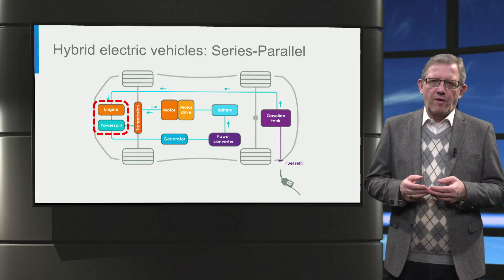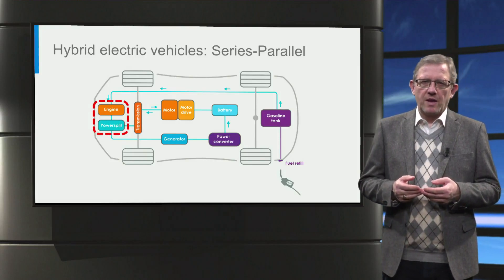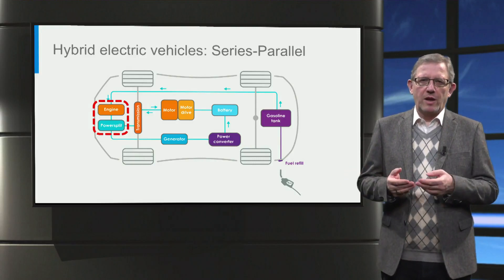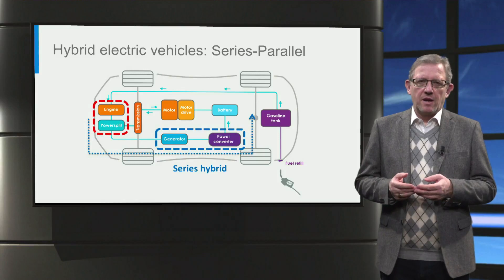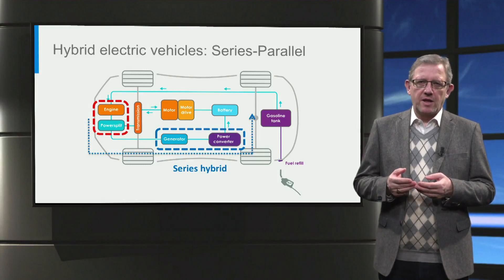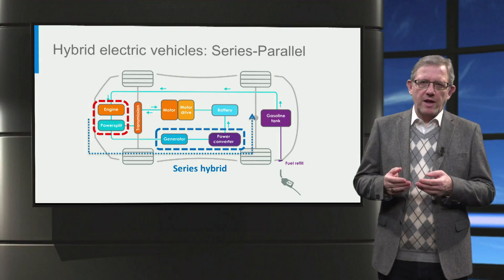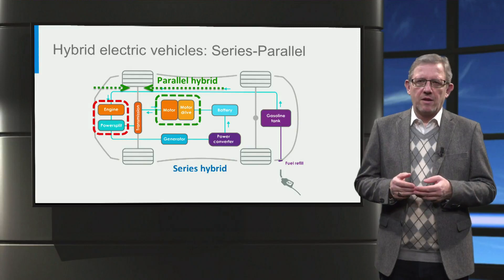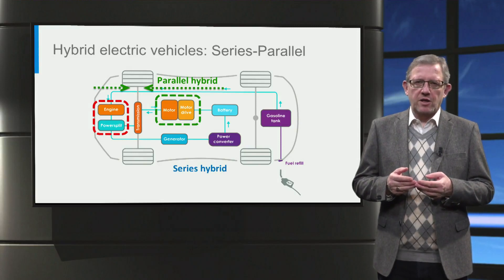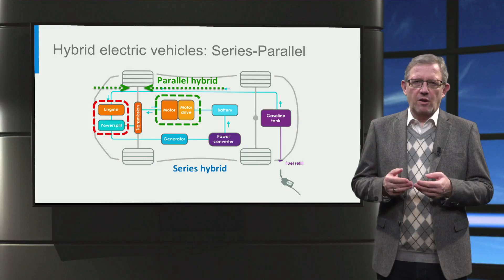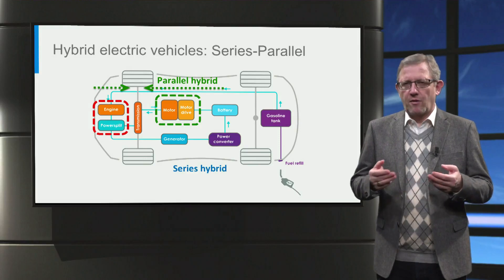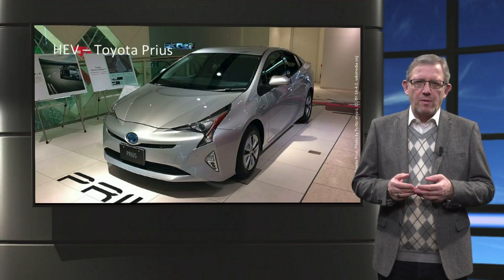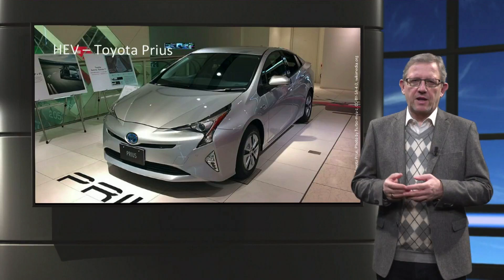The third type of hybrid is the series-parallel or dual mode hybrid. This has the flexibility to operate in either series or parallel mode by using a power split. It has a generator to charge the battery, as seen in a series hybrid, and it also has an engine and motor simultaneously powering the wheels, as seen in a parallel hybrid. Although this type of architecture is more flexible in terms of driving modes, it is also more complex and costly. The Toyota Prius is an example of a hybrid electric vehicle based on the series-parallel architecture.